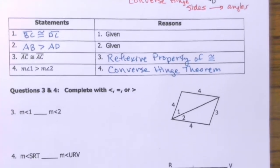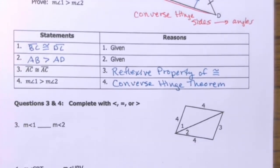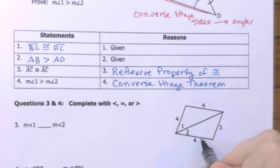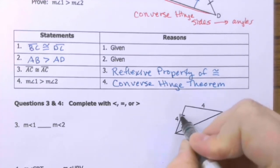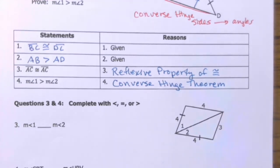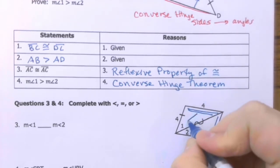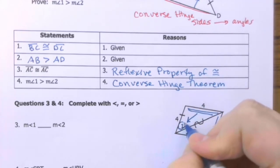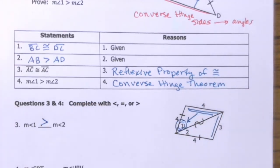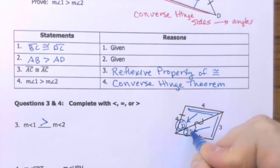Questions 3 and 4: complete with less than, equal to, or greater than, comparing angle 1 and angle 2. First, both triangles have a side of length 4 and they share a side — so the hypothesis of the hinge theorem is met: we have two pairs of identical sides. Now, one third side is 4 and the other is 3. Since 4 is bigger, the angle opposite the 4 — which is angle 1 — is greater than the angle opposite the 3, which is angle 2.